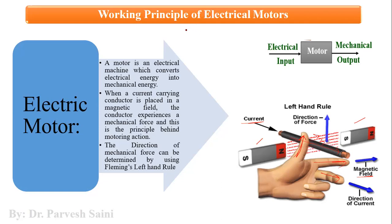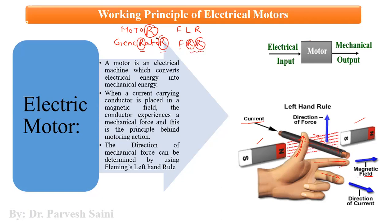To remember which rule applies: for a motor, Fleming's left-hand rule — motor has one R. For a generator, Fleming's right-hand rule — generator has two R's. This is a helpful trick to remember which rule is used in which electric machine to find the direction of current or mechanical force.